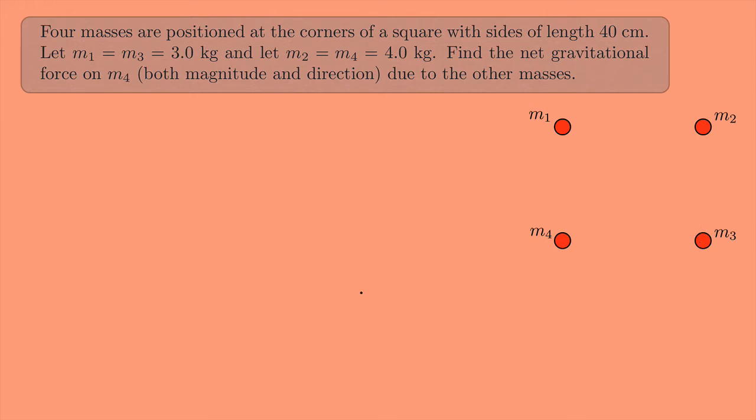Let's draw a free body diagram for mass number 4. So here's a set of axes, and I'm going to put mass number 4 right at the center right here. I'm going to label all the gravitational forces that are acting on mass number 4. I have the force from mass number 1 pointing up right here, the force from mass number 2 pointing at an angle, and the force from mass number 3 pointing here.